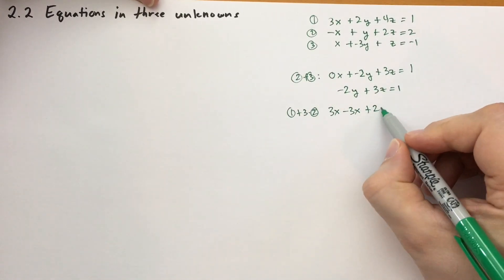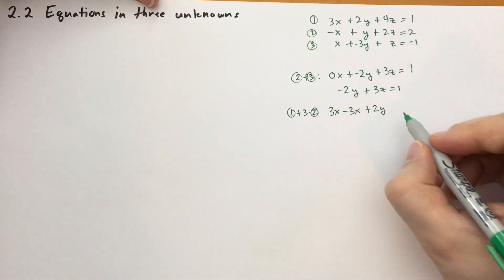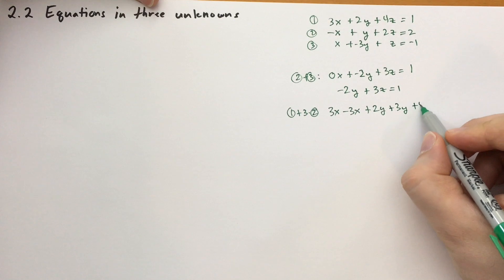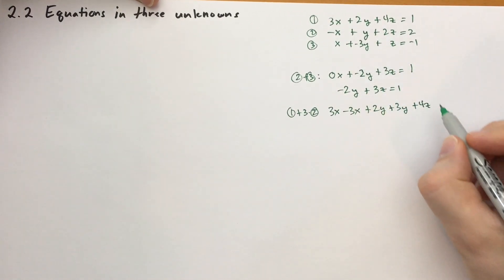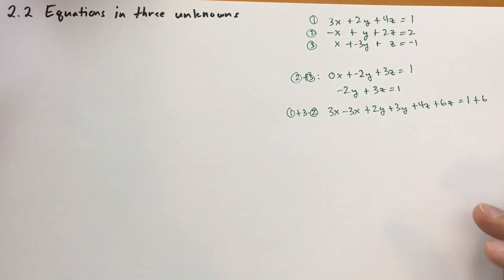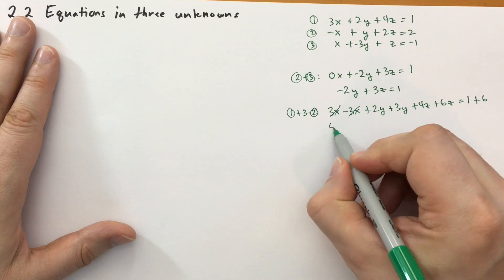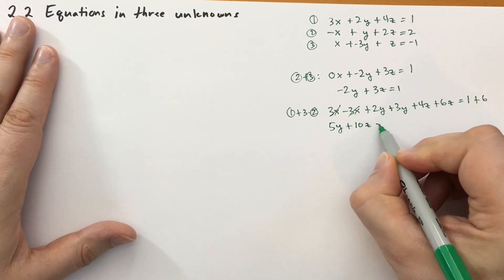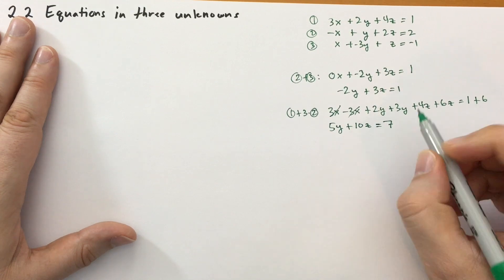We have 3x and then minus 3x. That's obviously going to be 0x. Then we have a 2y. Remember, we're multiplying the second equation by 3. So plus 3y, and then we have 4z, and then plus 6z. And finally, we have 1 plus 6. Okay, add that all up. These two terms cancel. We have 5y. Then we have 10z equals 7.